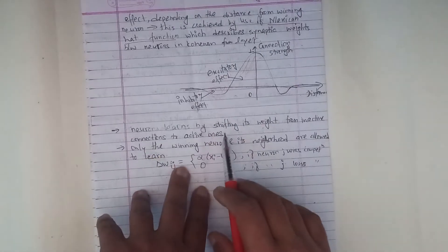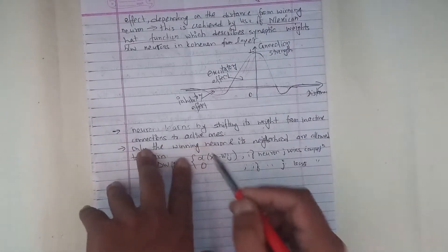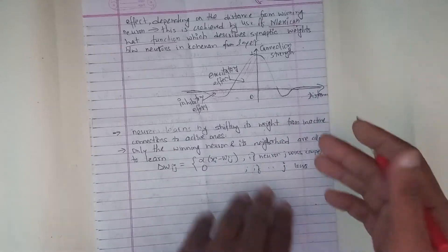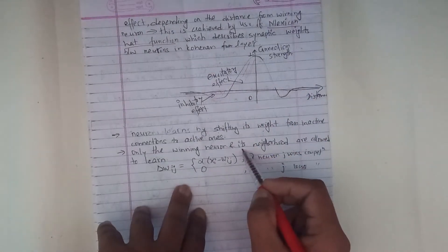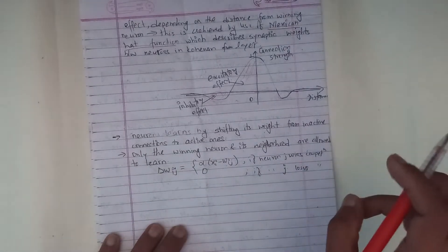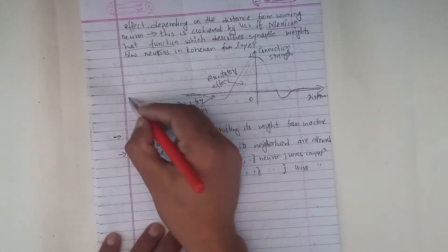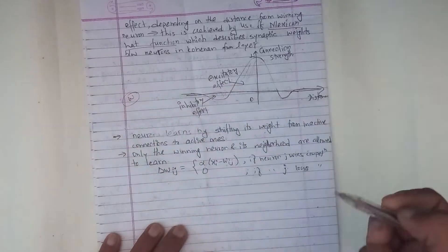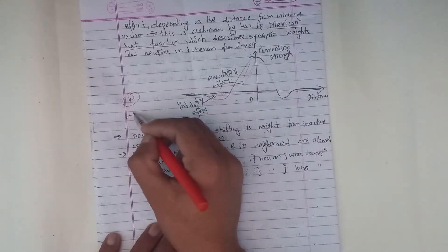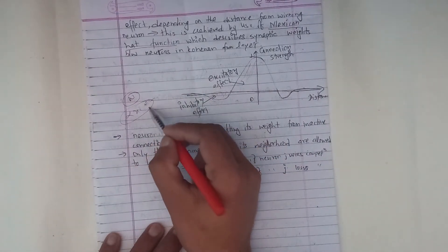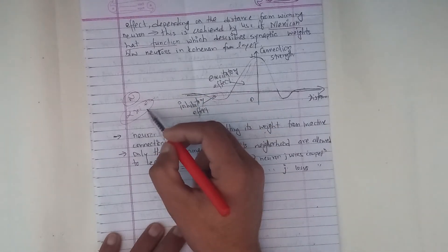A neuron learns by shifting its weight from inactive connections to active ones. Only the winning neuron and its neighborhood are allowed to learn. To update: learning rate, input signal, error — the connection between these two systems defines the learning update.